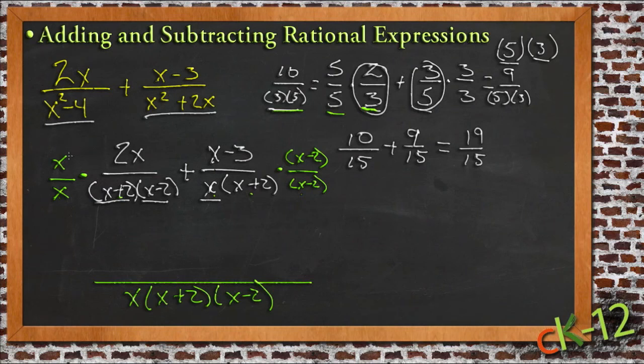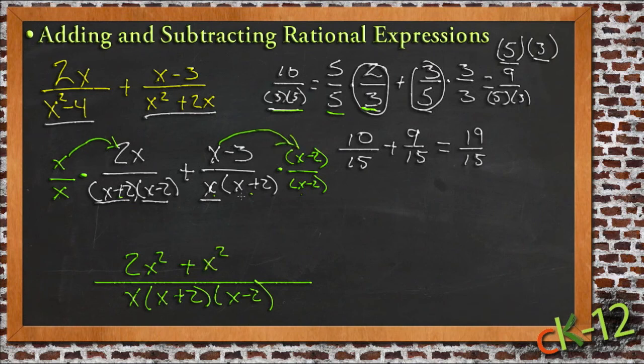Now I just take my numerators. I have x times 2x, that gives me 2x squared, and I'm going to be adding that to (x-3) times (x-2), so I have to FOIL that out. I get x squared, x times negative 2 is negative 2x, and negative 3 times x is negative 3x, so I have negative 5x, and then negative 3 times negative 2 is positive 6.